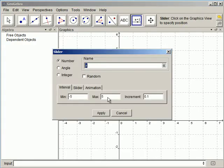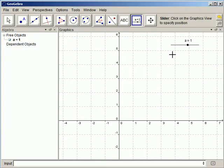So let's bring up some sliders and call the first one a, and the next one b, and the next one c.